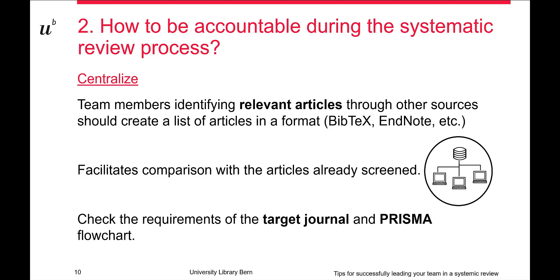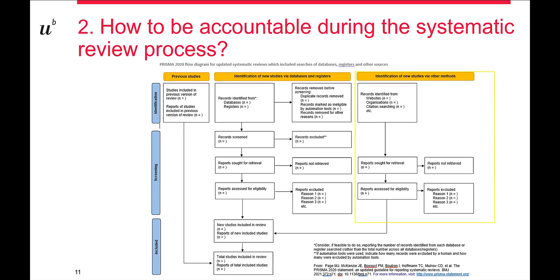At the end, you will be able to produce a PRISMA flow diagram presenting the numbers of how many articles you identified through databases or other efforts, how many were excluded during screening, and how many were finally synthesized in your systematic review.